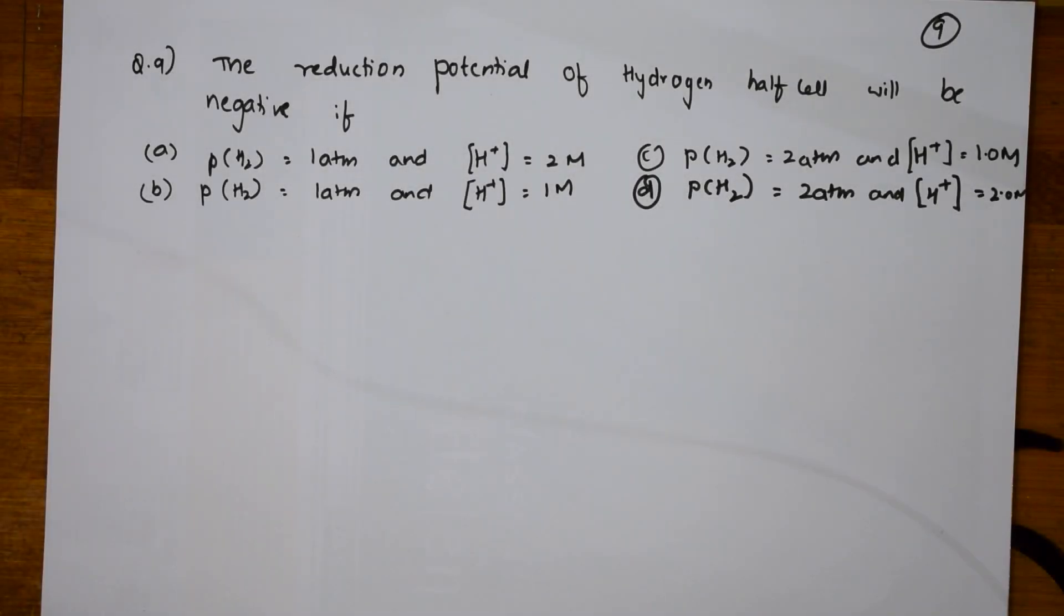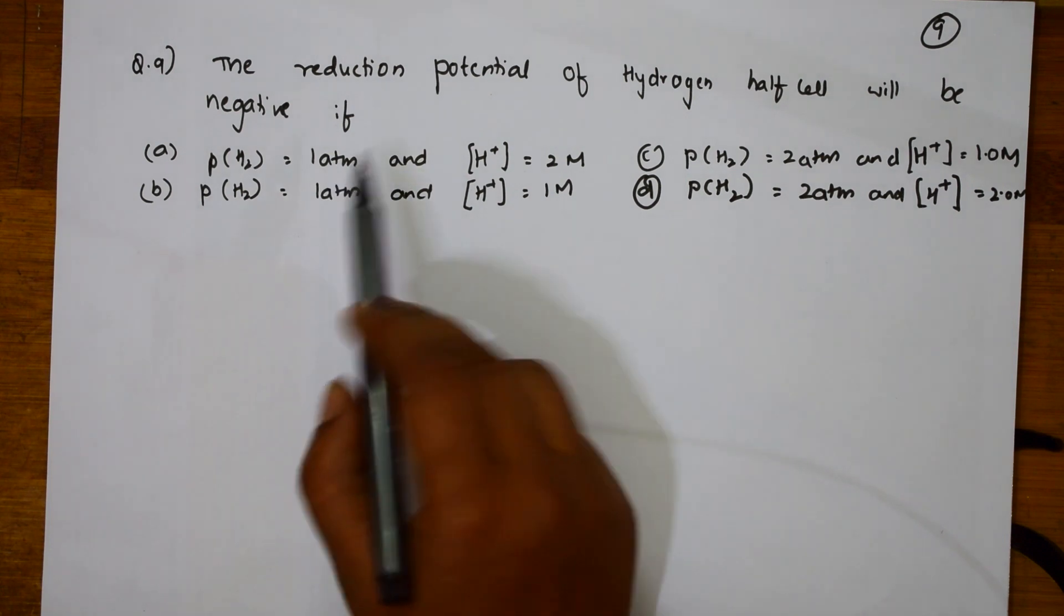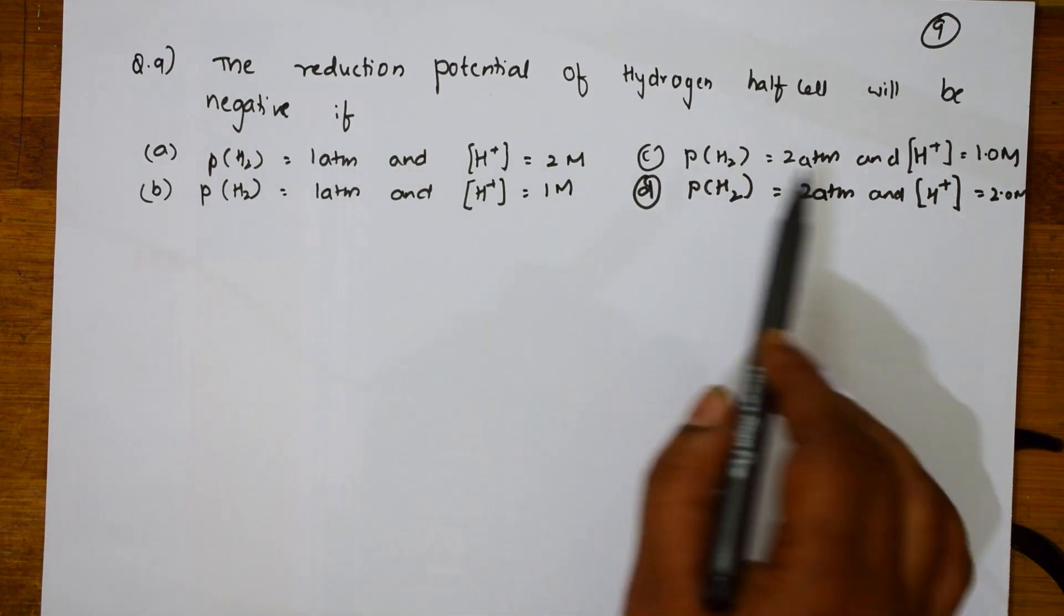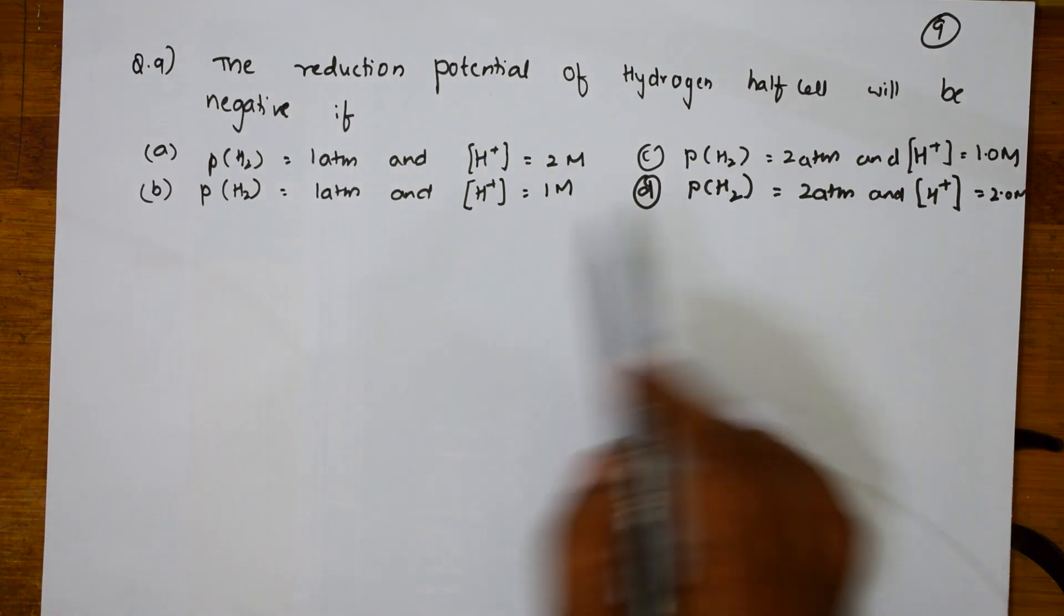Right. Now, the numerical is given in one of your exam, entrance exam, that is based on your hydrogen half cell. The reduction potential of hydrogen half cell will be negative under which condition, they are asking us.